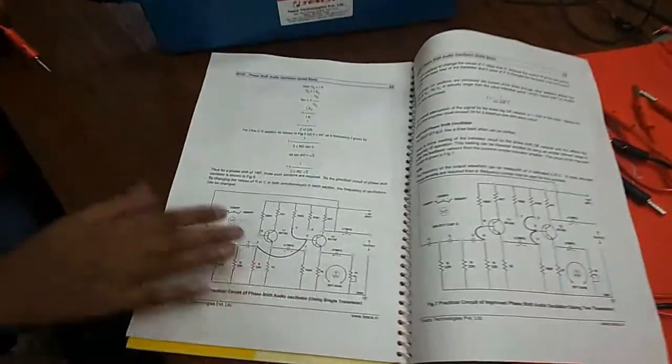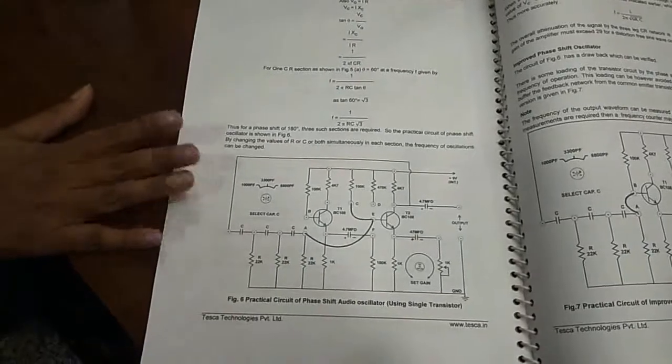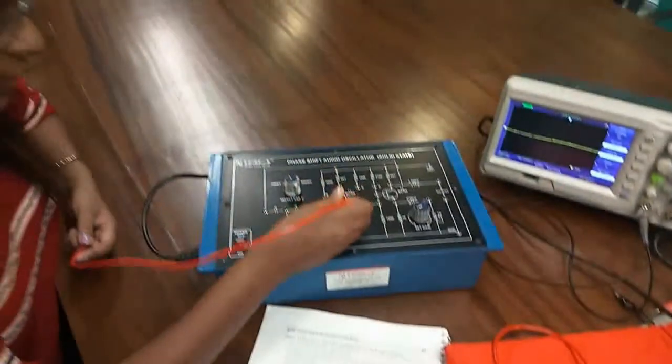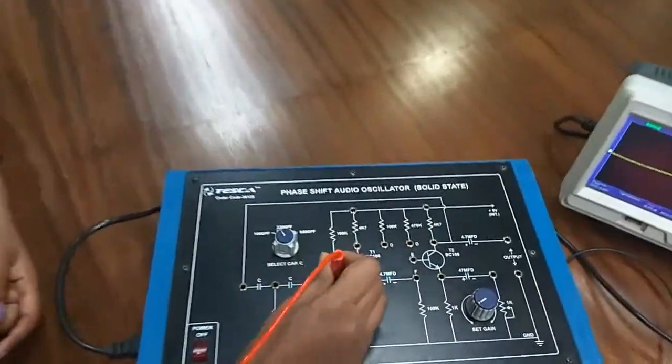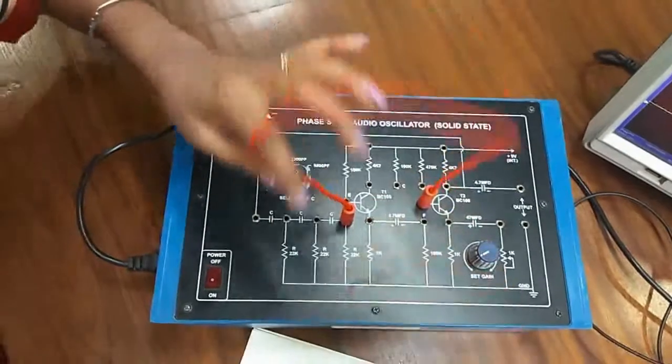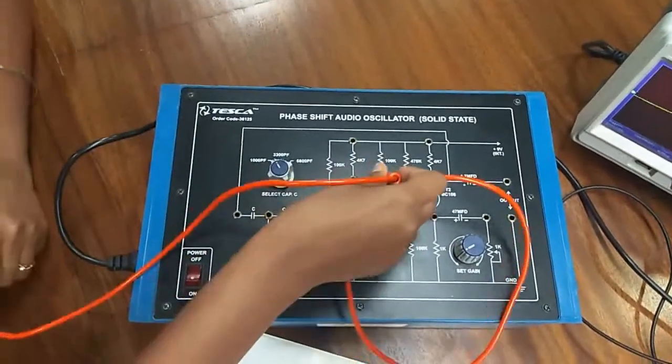This is the circuit diagram of phase shift oscillator using single transistor. So I am connecting A and E, and then C.